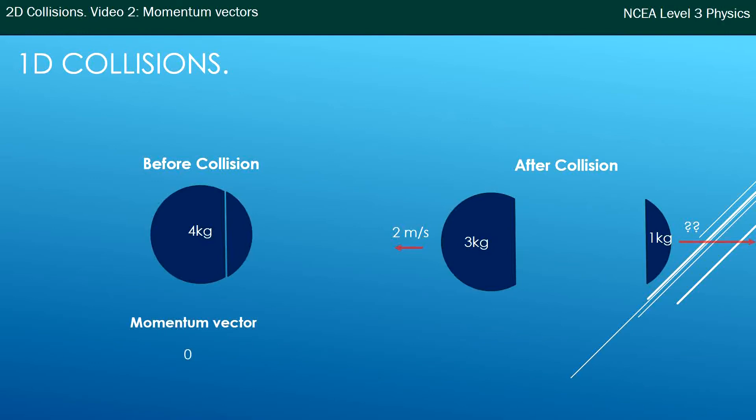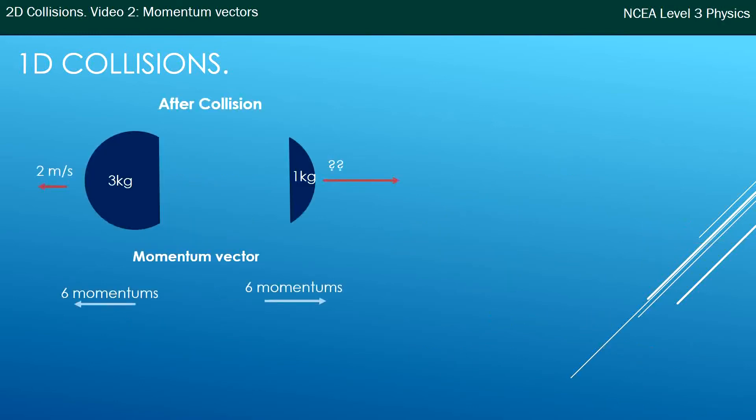So let's say I was doing the same problem but with arrows instead of the momentum bar charts. Well, to start with, there is no momentum vector. It's not moving at all. And afterwards I had six momentums left and six momentums right. So I draw arrows to represent those. How do I show that that equals zero?